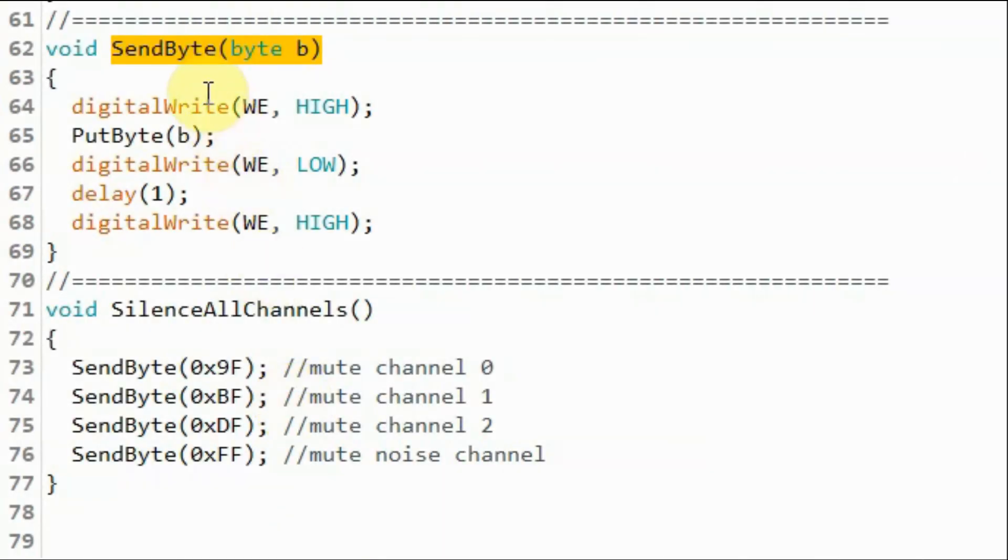So inside function send byte, this function will receive the byte to be sent to the IC. And then we put the write enable pulse high. And then we put the byte on the data lines by calling this function.